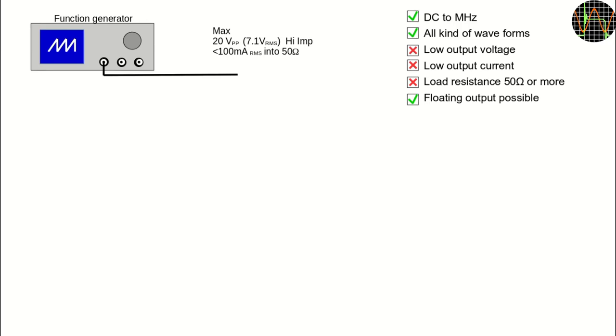Which would be kind of correct because most of the stuff in this box is in fact the power supply. Why would you want to add an amplifier to a function generator? Most affordable function generators are pretty limited in what their output stage can produce.